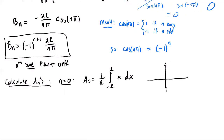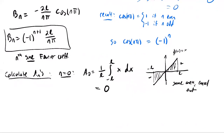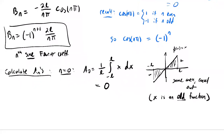One way to see this without computation is to remember that the integral is the signed area between the graph and the axis. The function phi(x) = x creates equal positive and negative areas that cancel out. This is because x is an odd function, which we'll talk more about later. So the a_0 coefficient is zero. Now let's calculate a_n for n ≥ 1.